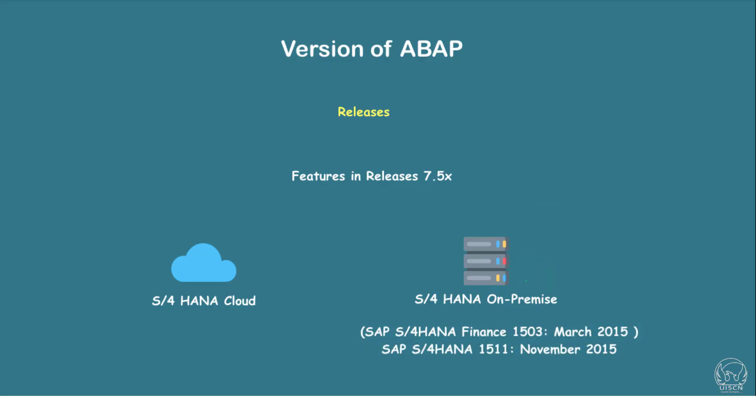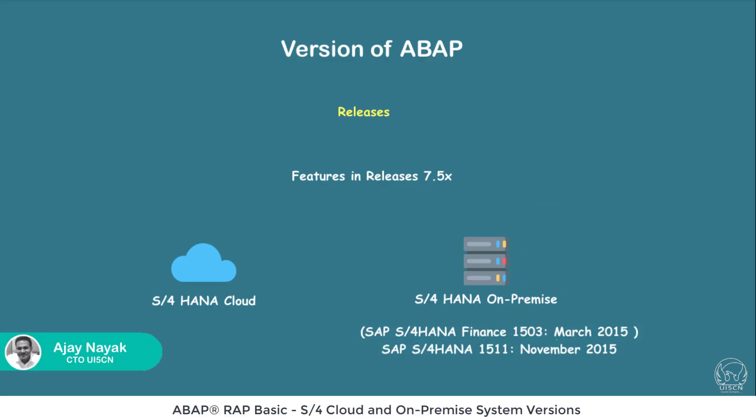The first S4HANA on-premise was released in March 2015 and the version was 1503, and it was S4HANA Finance. The main release covering all ERP modules, including the sales module and other important modules, came in November 2015 and this was the 1511 release.